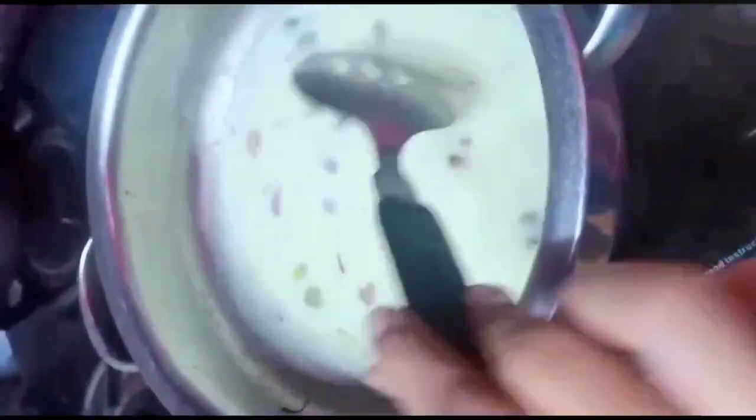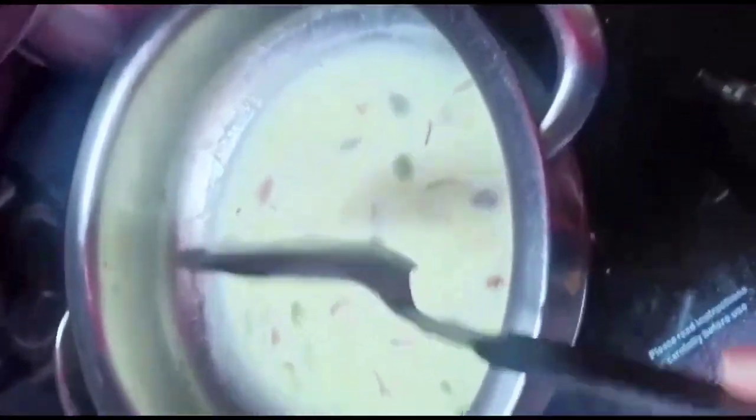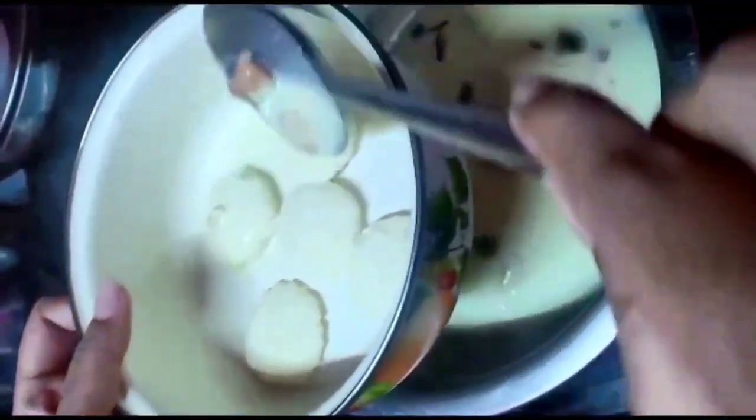Now add sugar in this bowl and mix the milk well. You can see how the milk has formed. After the dry fruit milk boils out well, switch off the stove. Now take milk and add on top of it.